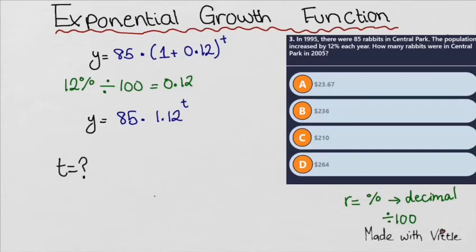t is the number of years between 1995 and 2005. If we subtract 1995 from 2005, we get 10. So t equals 10.